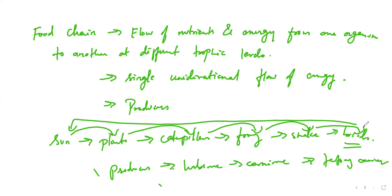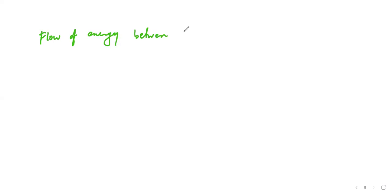A very important part is the flow of energy between trophic levels. We know the different trophic levels: sunlight, producer, then herbivores, carnivores, top carnivores. Now, the flow of energy is very important because whenever it transfers energy from, say, the producer to the carnivores — if I take a green plant, the green plant is going to take only 1% energy from the sun, and that particular energy is converted into food energy.